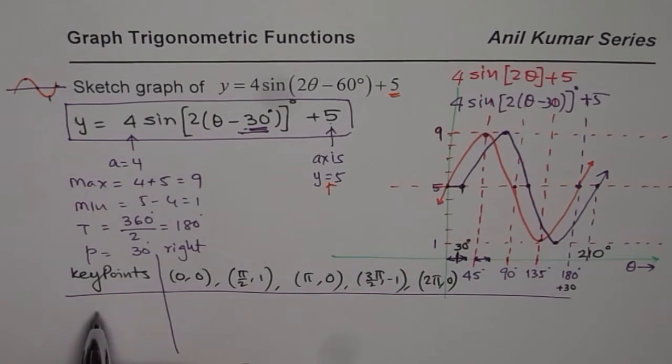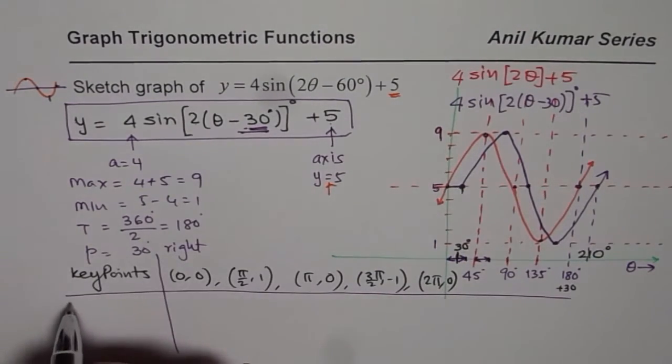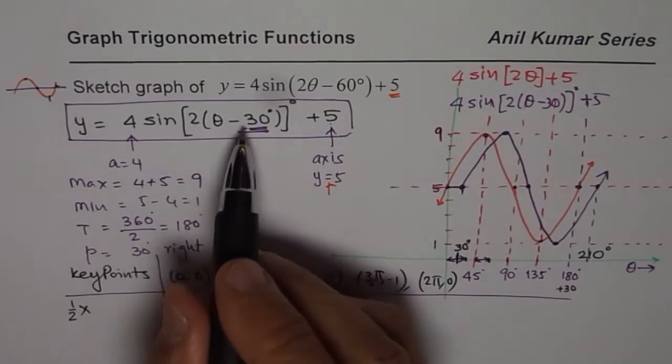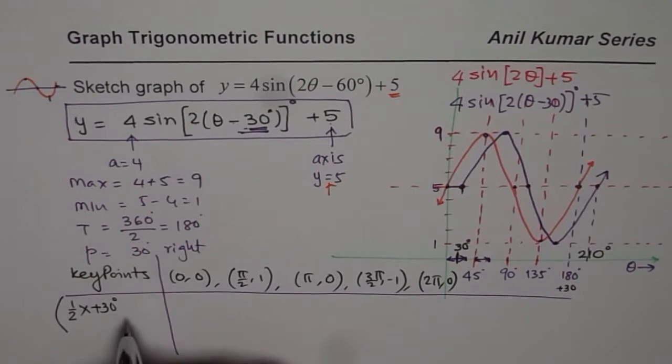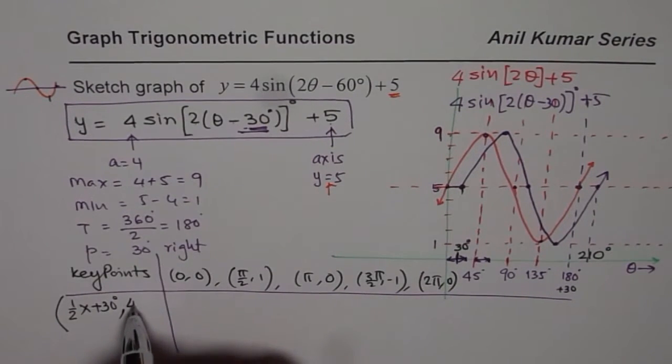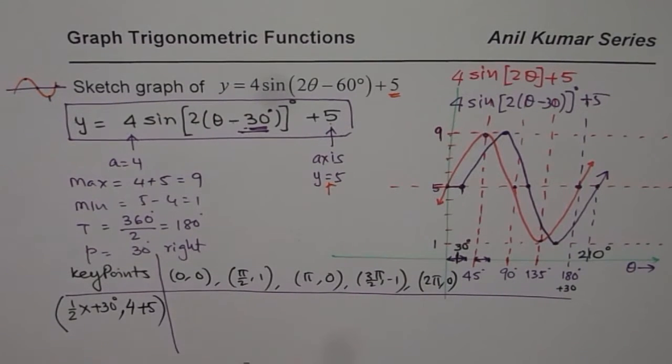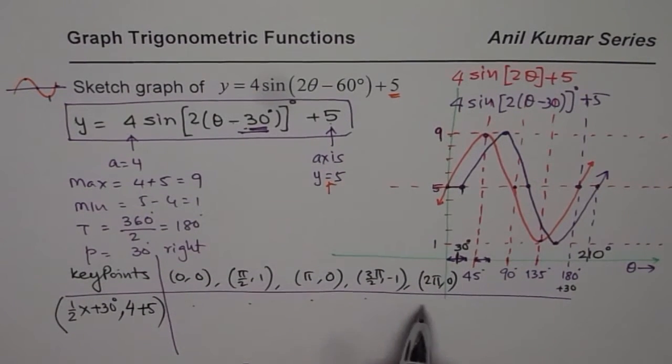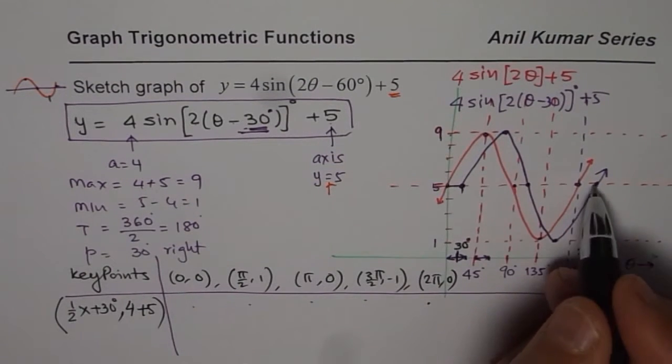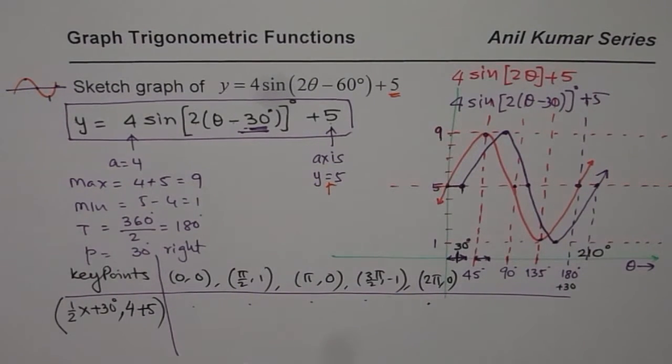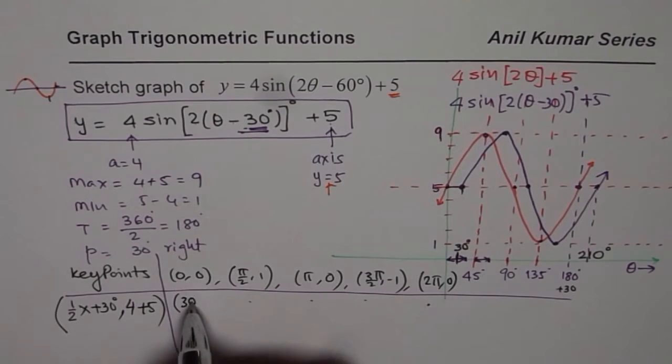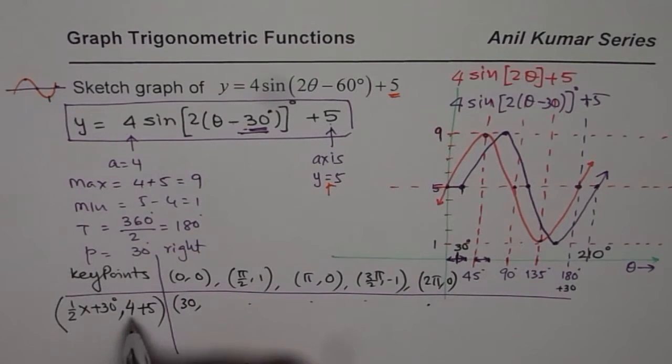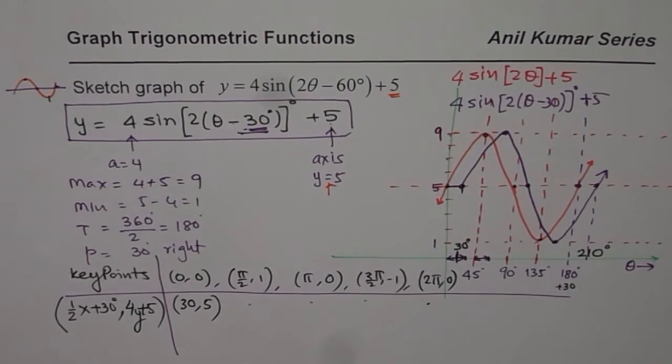Looking into the equation, the transformation is: the x values become half of the original x values and then you have to add 30 degrees. For y values you have to multiply by 4 and add 5. Once you do this transformation of these points you will get these points. Plot those points, join them to get the final result. X value will be half of this plus 30, and y value will be 4 times y plus 5.